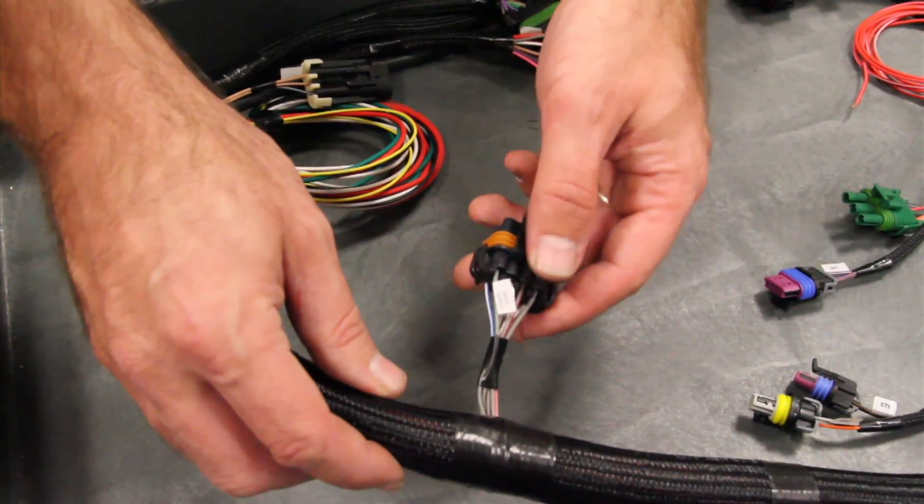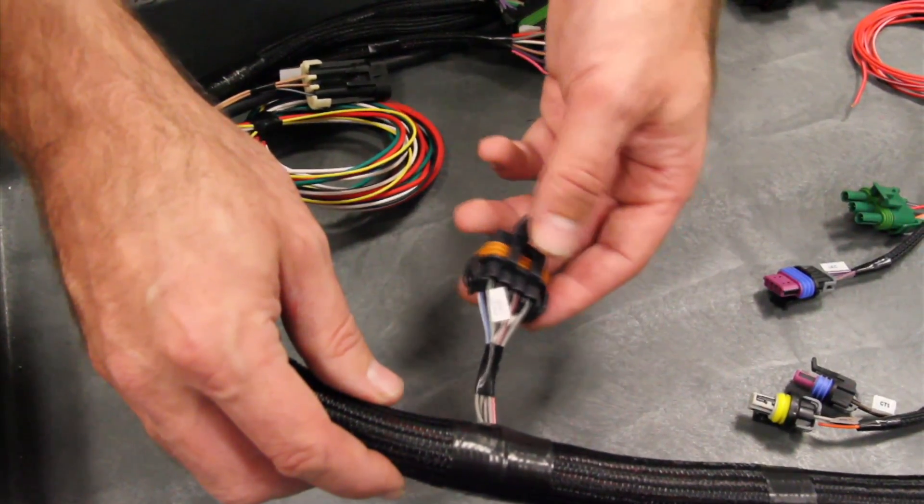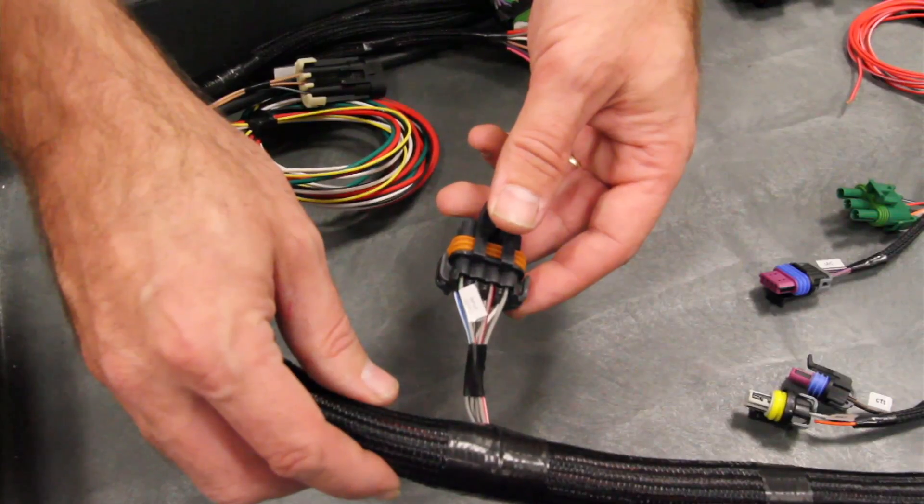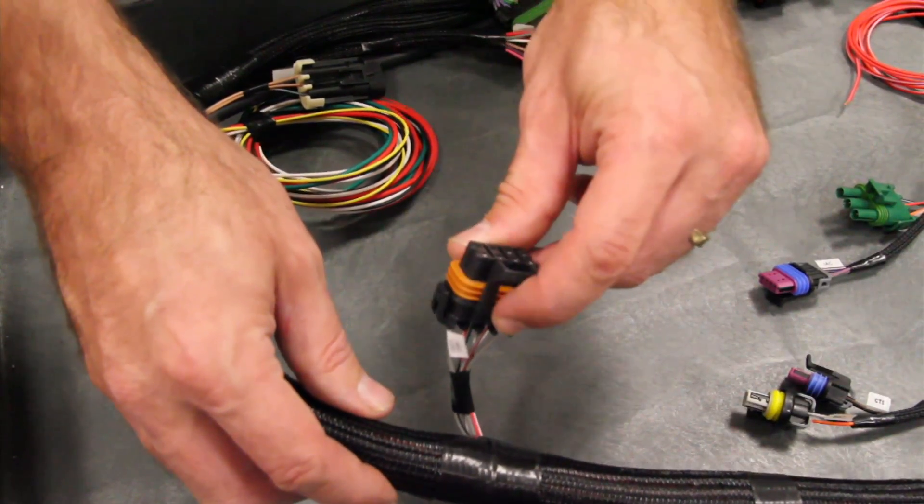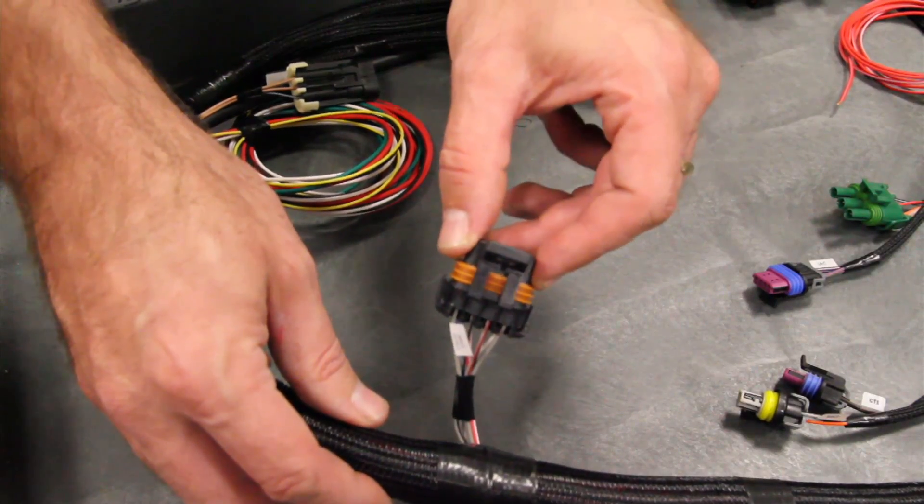Towards the middle of the harness is what's labeled the input-output connector. This is for four inputs and four outputs that are optional. You can do things such as turn an electric fan on. You can purchase an optional connector that plugs right into this with the wires should you desire.